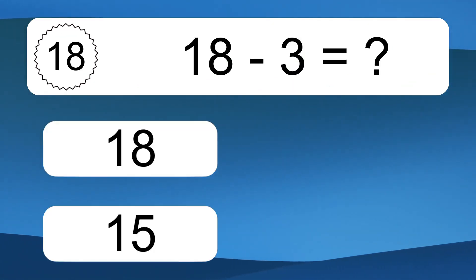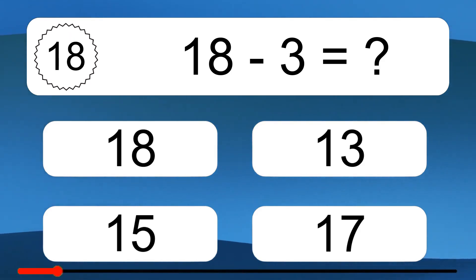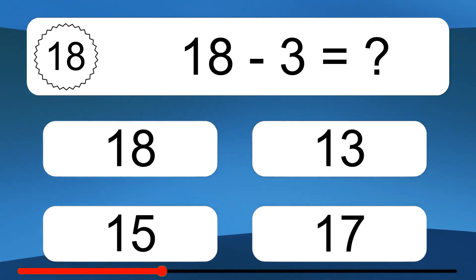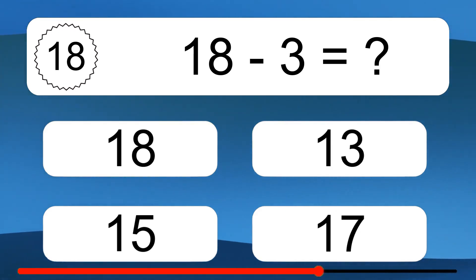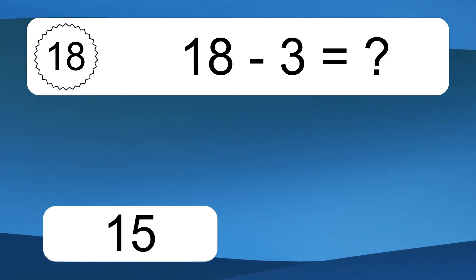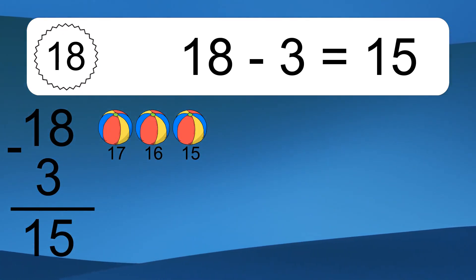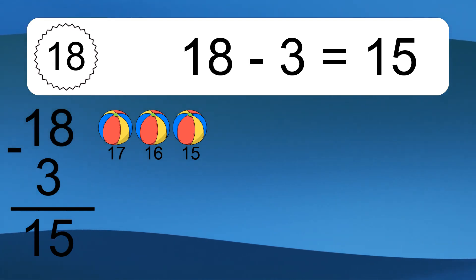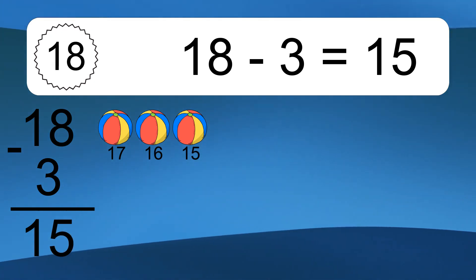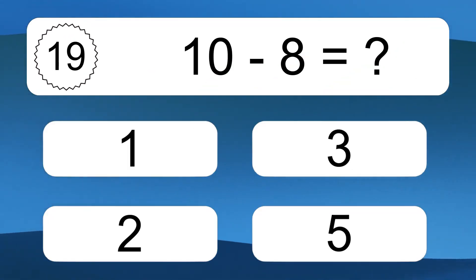18 minus 3 equals what? 18 minus 3 equals 15. Let's count it. 17, 16, 15.